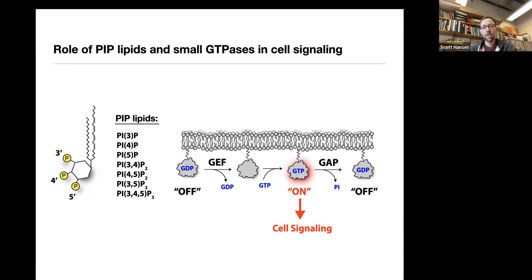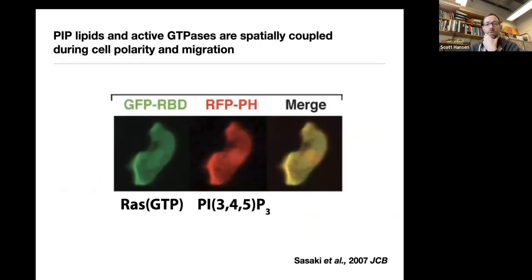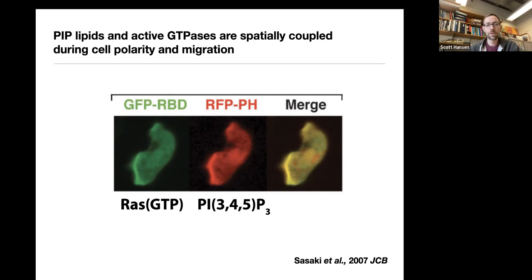There's a lot of communication and feedback between these two biochemical reactions and we want to understand how that is achieved inside cells. It's been appreciated for a long time that there is tight spatial and temporal coupling between PIP lipids and small GTPases. What you're seeing here is a biosensor for RAS at the leading edge of Dictyostelium and then a PIP3 sensor. If you disrupt either one of those signaling pathways you break down the ability to effectively polarize and migrate.